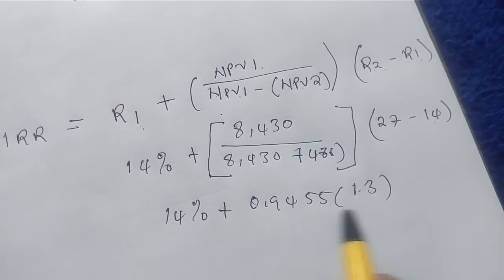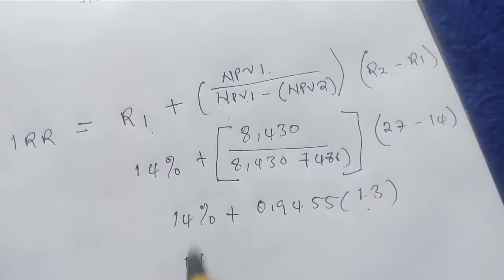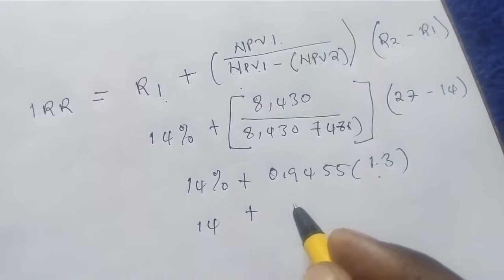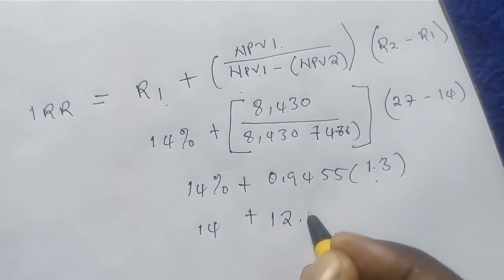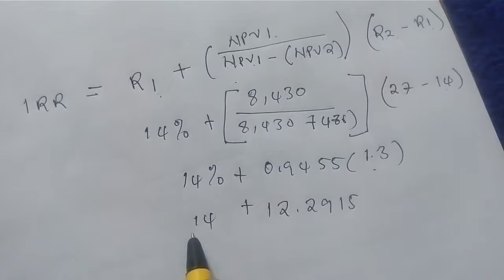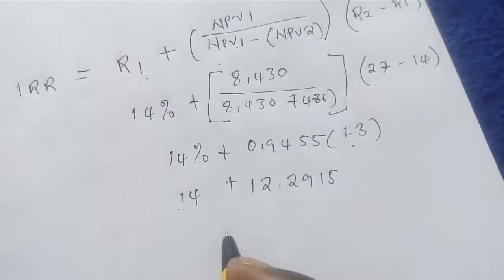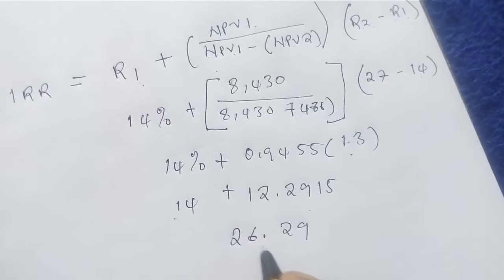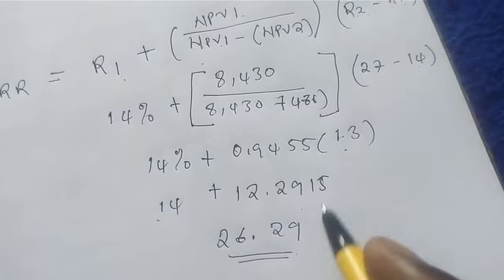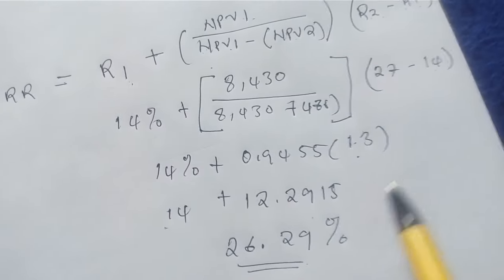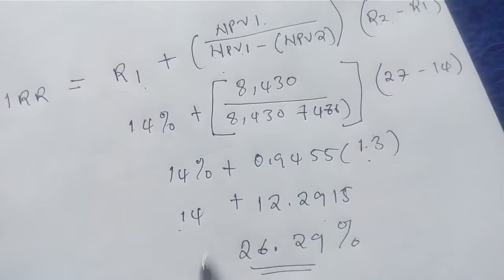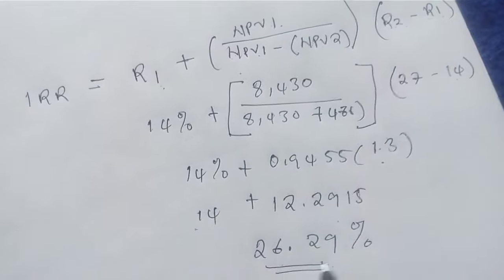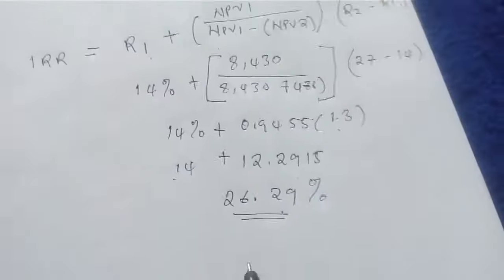Doing the multiplication: we bring down 14%, then multiplying 0.9455 by 13 gives 12.2915. Adding this to 14 gives us our internal rate of return, which is 26.29% — rounding to two decimal places. Remember, the internal rate of return is in percentage. This is the rate that, when used to find the net present value, will give us a net present value of zero.